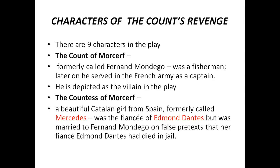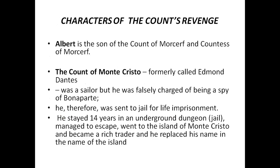The second character is the Countess of Morcerf. She is a beautiful Catalan girl from Spain, formerly called Mercedes. She was the fiancée of Edmond Dantès but was married to Fernand Mondego on the false pretext that her fiancé Edmond Dantès had died in jail. So she got married to the Count of Morcerf on false grounds. The third character is Albert, who is the son of the Count of Morcerf and the Countess of Morcerf.